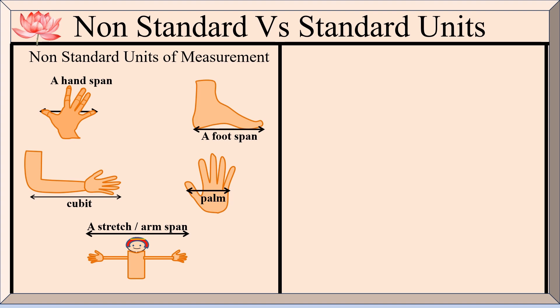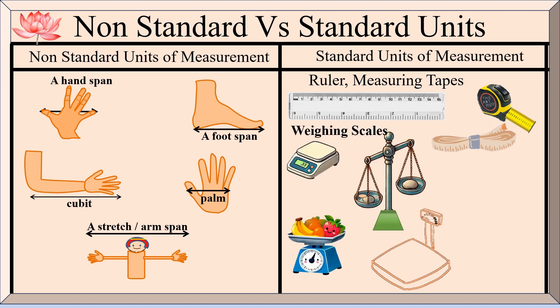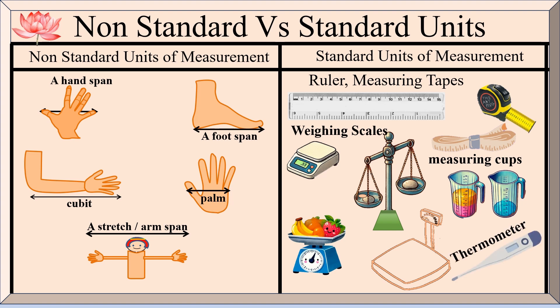Today we use standard units to measure things around us, such as inches, centimeters, grams, kilograms, liters, degrees, and so on. These units help us measure length, weight, capacity, and temperature accurately. A ruler is used to measure length, weighing scales for weight, measuring cups for capacity, and a thermometer is used to measure temperature.